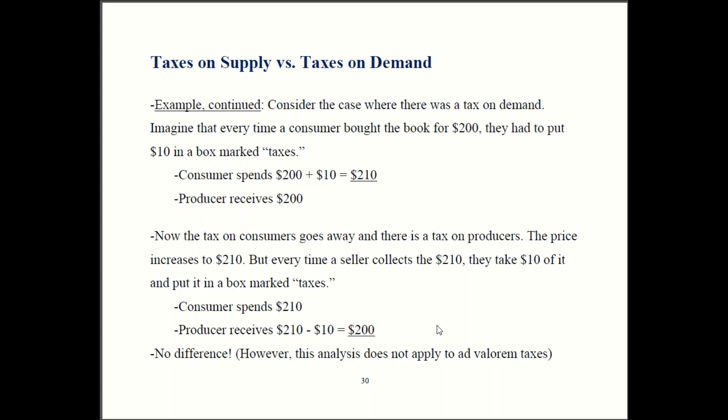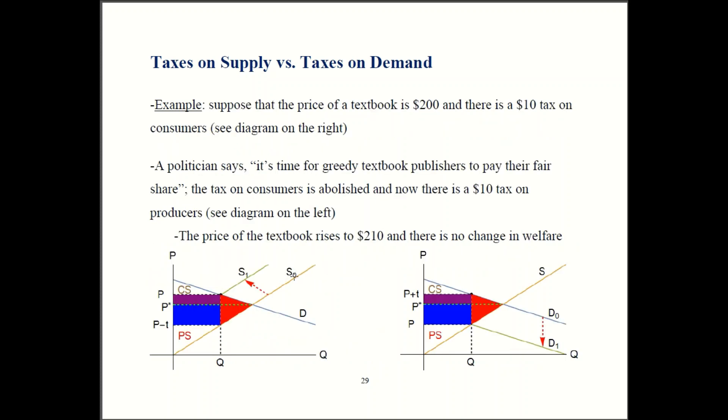Now, one important caveat to add here. This is true for the unit taxes we've been talking about, or the specific taxes they're also called. This actually is not true for ad valorem taxes. I mentioned earlier that ad valorem taxes are percentage taxes. So things like a sales tax, you pay a 10% sales tax. That's an ad valorem tax. In that case, with ad valorem taxes, the effects actually are different depending upon whether you tax supply or demand. Why is that true? Well, an ad valorem tax, like a sales tax, is a percentage of price. If you tax supply, prices go up. So it's a percentage of a bigger number. If you tax demand, prices go down. So now your sales tax is a tax on a smaller number. So now it does matter if you do an ad valorem tax.